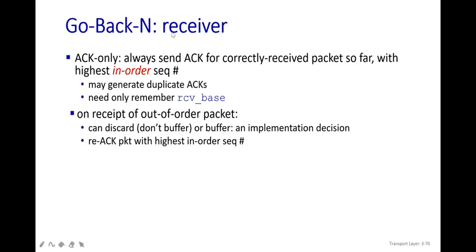On the receiver side, the receiver sends acknowledgement only for correctly received packets. It always sends acknowledgement for a correctly received packet — for example, if packet zero is received, acknowledgement zero is sent to the sender. Everything will be in order sequence. It will not disturb the order. It may also generate duplicate acknowledgements — if the acknowledgement has not reached the sender, it retransmits, so the sender may receive duplicates.